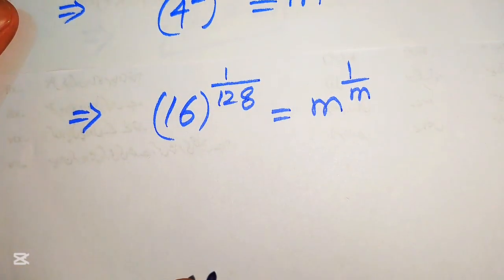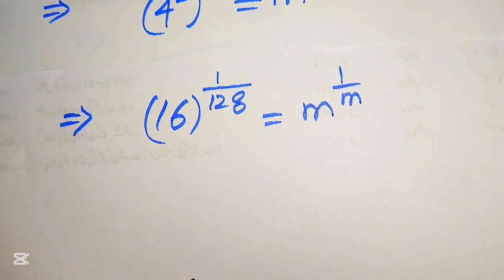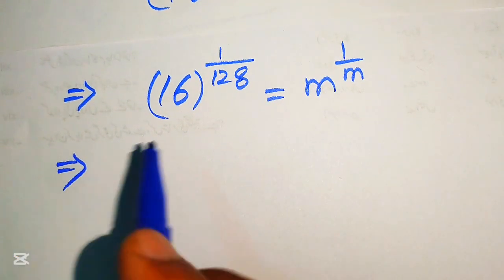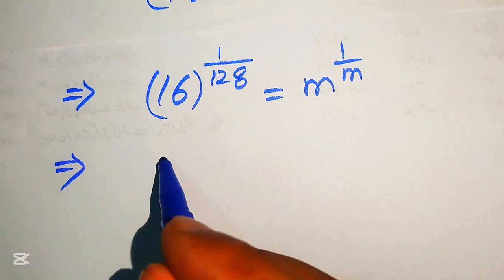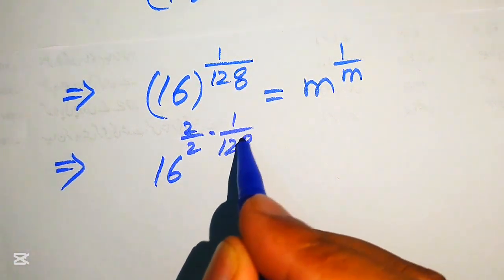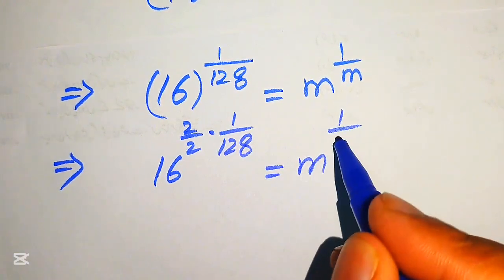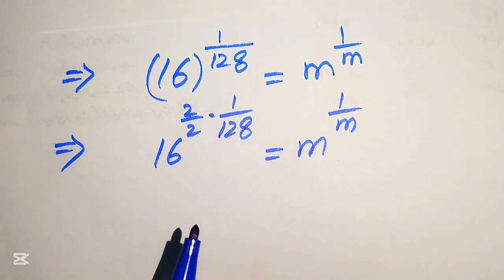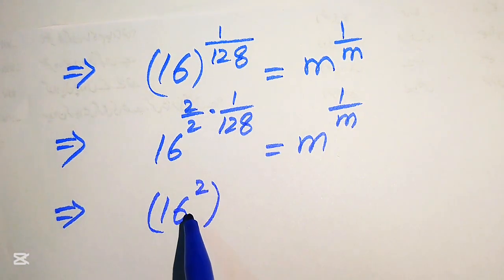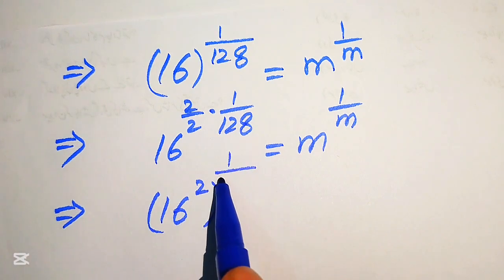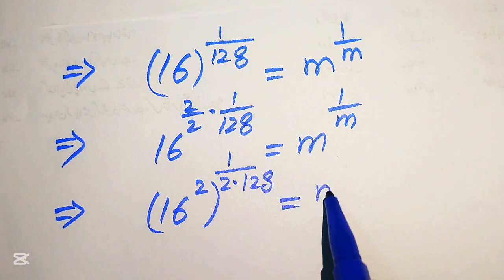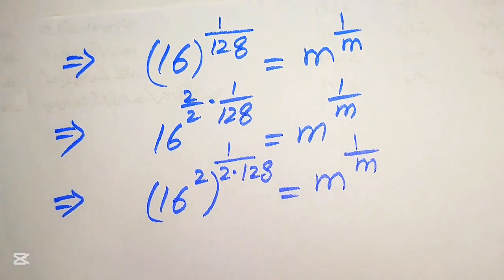We still cannot get the exponent to be the reciprocal of 16, so we again divide the exponent by 2: 2 over 2 multiplied by 1 over 128 equals to m to the power of 1 over m. Again we move this 2 inside the term, so it becomes 16 squared, whole exponent 1 over 2 times 128, equals to m to the power of 1 over m.